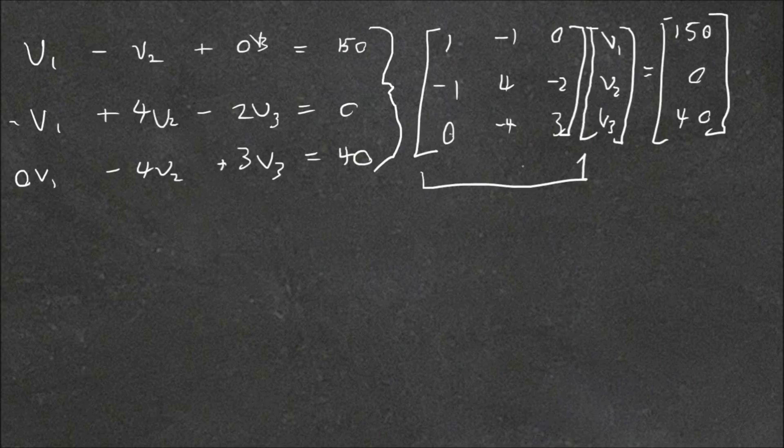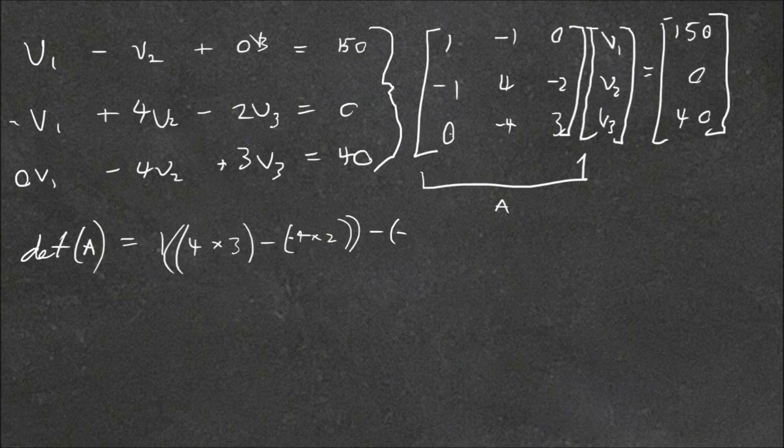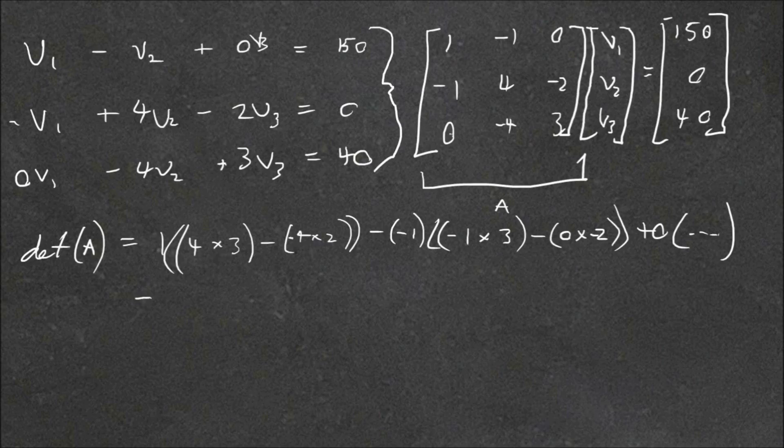So now we have to find the determinant of this. We'll call it the A matrix. And so the determinant of A, we'd get by doing 1 times by 4 times by 3 minus 4, minus 4 I should say, times by 2, minus 1 times by minus 1 times by 0 times by 2, minus 2 I should say. Plus 0 times by, but it's equal to 0, so it doesn't matter. And if you solve all that, you should get a determinant equal to 1.